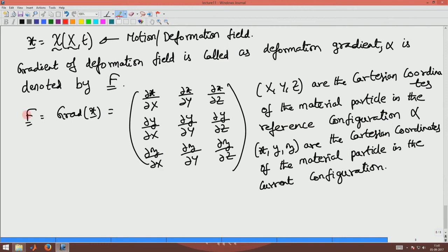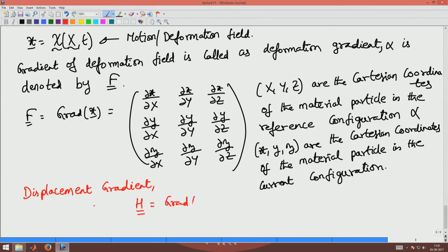The nine components of F are represented as a deformation gradient matrix. Now let us define the displacement gradient, which is denoted by capital H, and equals Grad of u. Here I use capital G to denote that the gradient is with respect to capital X, Y, Z. If it is the gradient with respect to small x, y, z, I will use a small g instead of Grad.